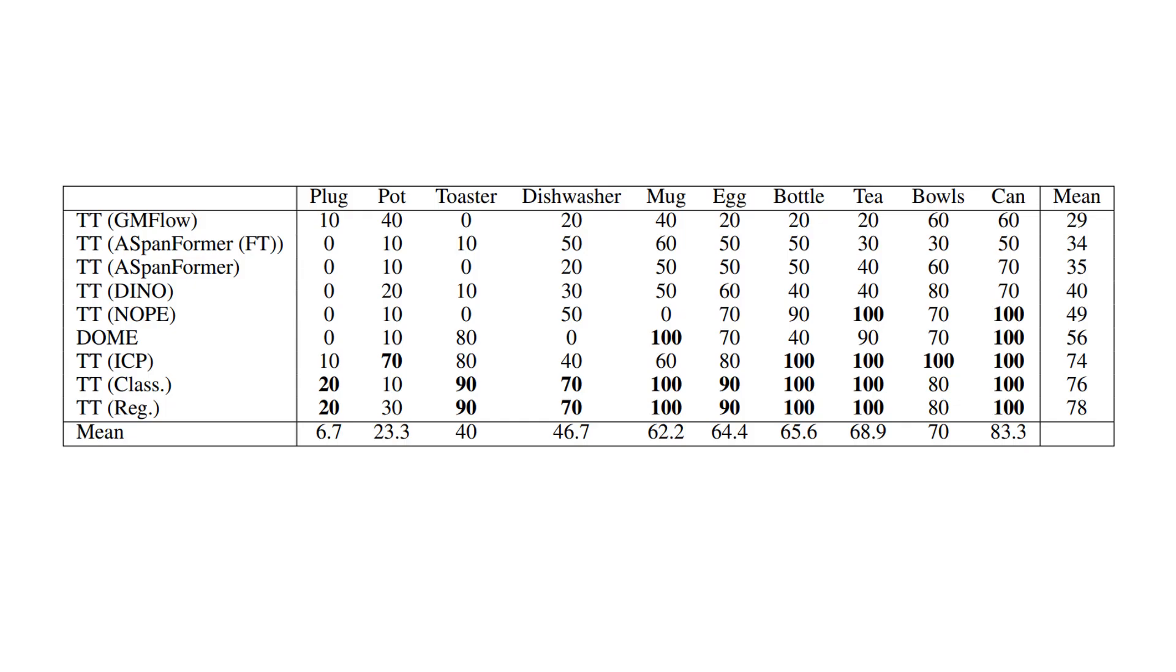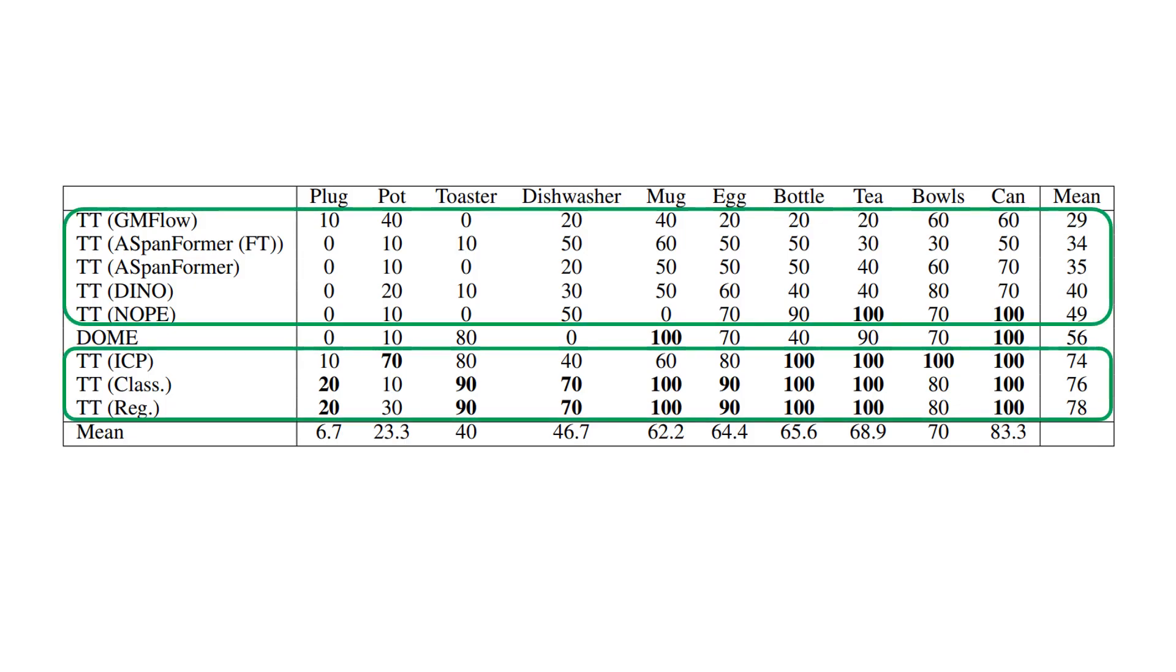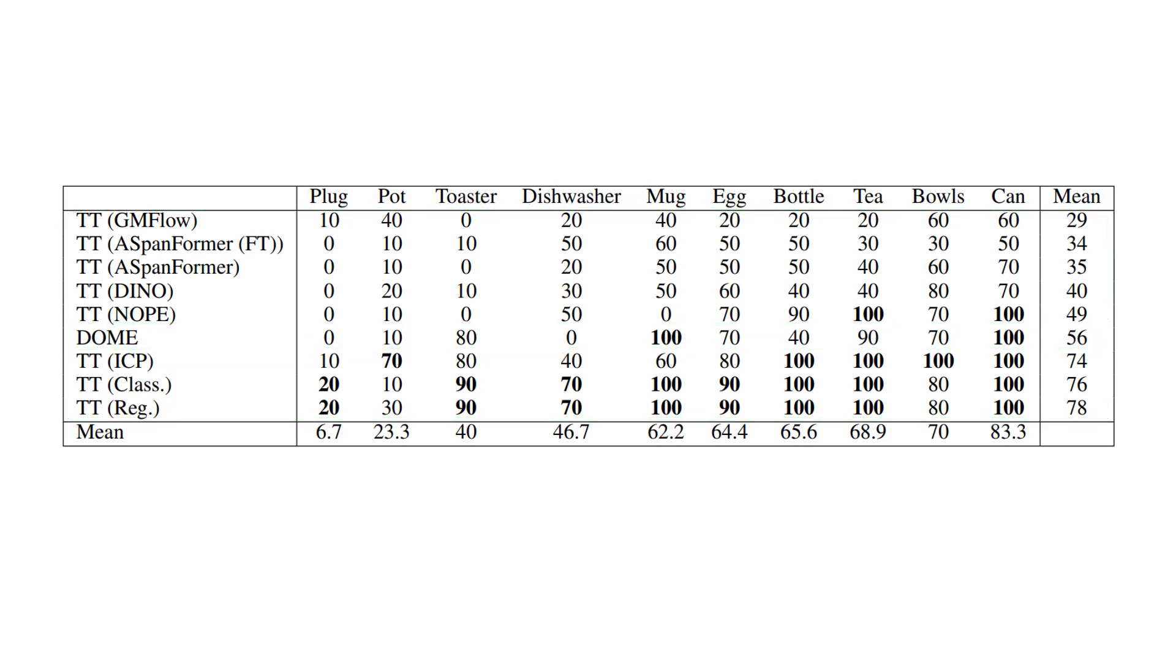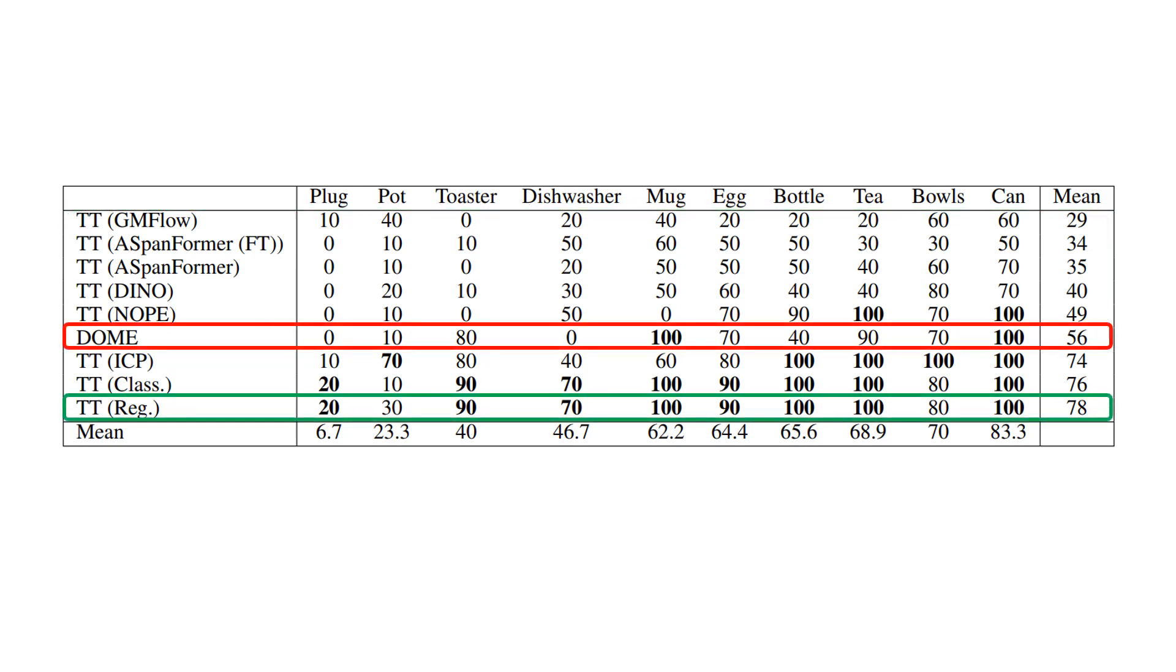Our results show that the unseen object pose estimation formulation of one-shot imitation learning is capable of outperforming DOE by 22% on average.